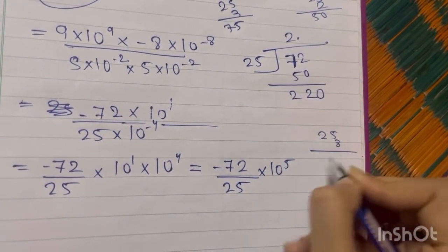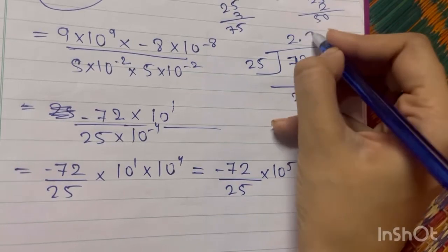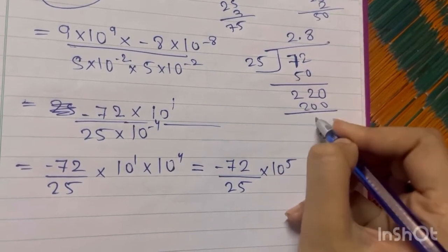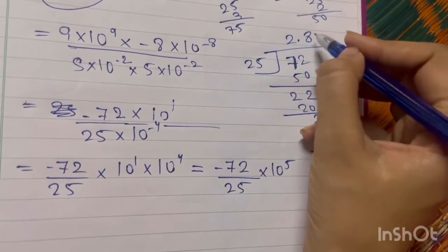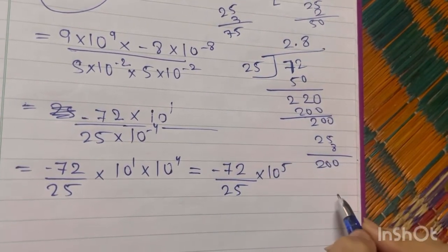Now, 25 times 8 will give us 200. So 25 times 8 is 200, so 20 comes in the remainder. Because of the decimal point, it becomes 200.